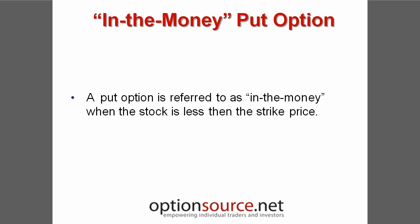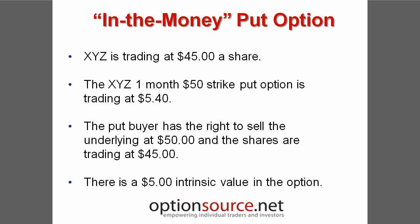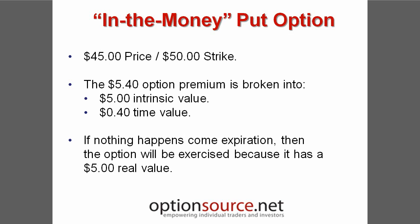A put option is characterized as being in the money when the share value of the underlying is less than the strike price. With XYZ at $45 per share, a $50 strike put option with one month until expiration may be trading at $5.40. The put buyer has the right to sell the underlying shares at $50 even though XYZ is trading at $45. We determine the intrinsic value of the put option by subtracting the share value from the strike price. In this example, a $50 strike minus the share value of $45 reflects an intrinsic value of $5. The $5.40 premium can be broken down into two parts: by subtracting the $5 intrinsic value, we can determine that the time value component of the option premium is $0.40. If the share value remains the same, the time value component will depreciate to $0, leaving the intrinsic value only.